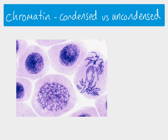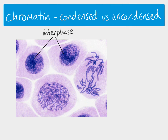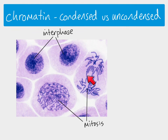Here's an example of looking at cells down a microscope. In order to see the chromatin at all, you have to stain the cells. Looking at these two cells, we can see they must be in interphase because although we can see the dark stained chromatin area, we can't make out any individual chromosomes - that's because the chromatin is uncondensed. However, in these other two cells we can actually see the individual chromosomes, so those cells are in mitosis. We can see the chromosomes are starting to separate to eventually form two nuclei - these are two different stages of mitosis, and we can see the chromosomes much more clearly because the chromatin has condensed.